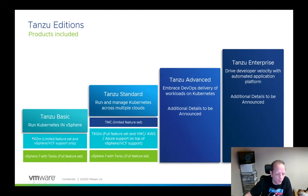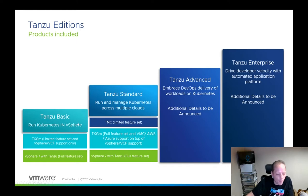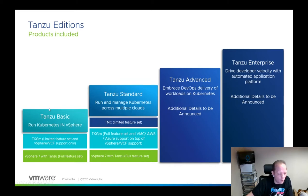At a very high level, Tanzu Basic references vSphere 7, TKGm, and running on vSphere. The intent is that if you want to run Tanzu, if you want to run Kubernetes on vSphere, you might have some sites running vSphere 6.7 U3 and some sites running vSphere 7.